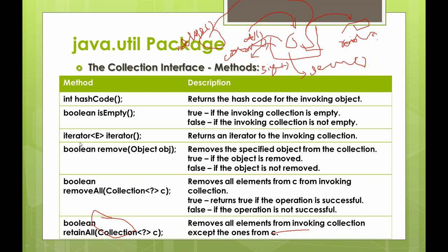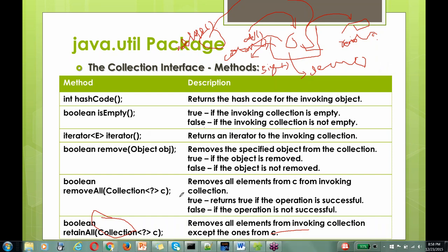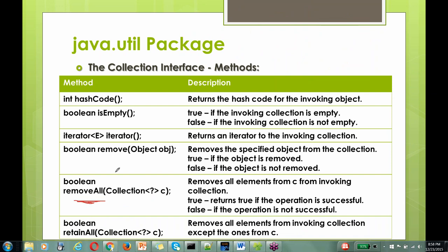Both iterable and iterator are interfaces. Then we have remove and removeAll. If you want a particular set of objects to be removed, you specify those objects in one collection and call removeAll. The retainAll method does the exact opposite of removeAll — you pass a collection of objects to be retained, and everything else is removed.